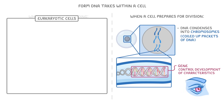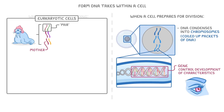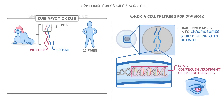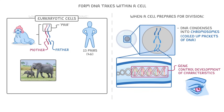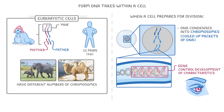Eukaryotic cells, such as animals, have two copies of each chromosome, which we call a pair. One of these copies is from their mother, and the other copy is from their father. Humans have 23 pairs of chromosomes, so in total they have 46 chromosomes. Other species, though, have different numbers of chromosomes, and this is one of the reasons that animals of different species can't reproduce to have fertile offspring.